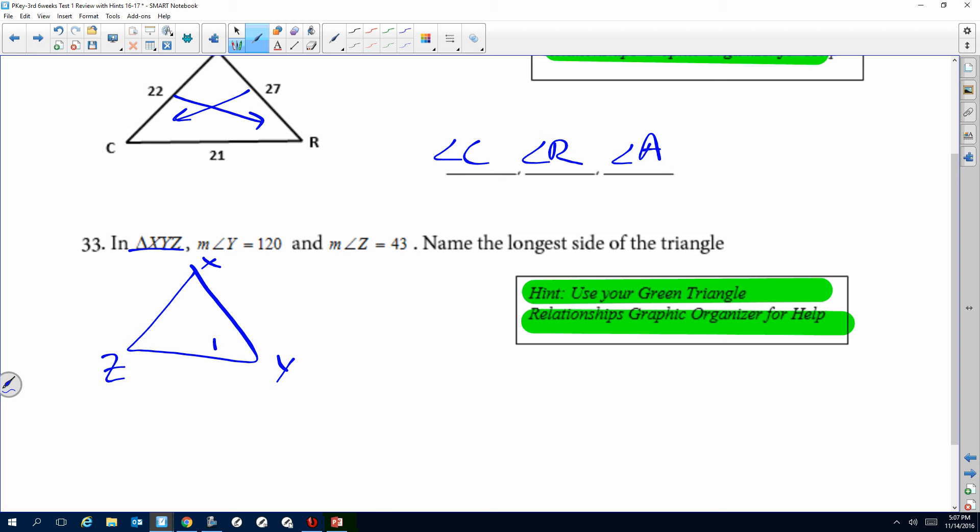Triangle Y is 120, which obviously that's not to scale because that's obtuse. Z is 43. This is 'name the longest side.' So before we can do that, we need to have all three angles. We need to find this missing angle here.